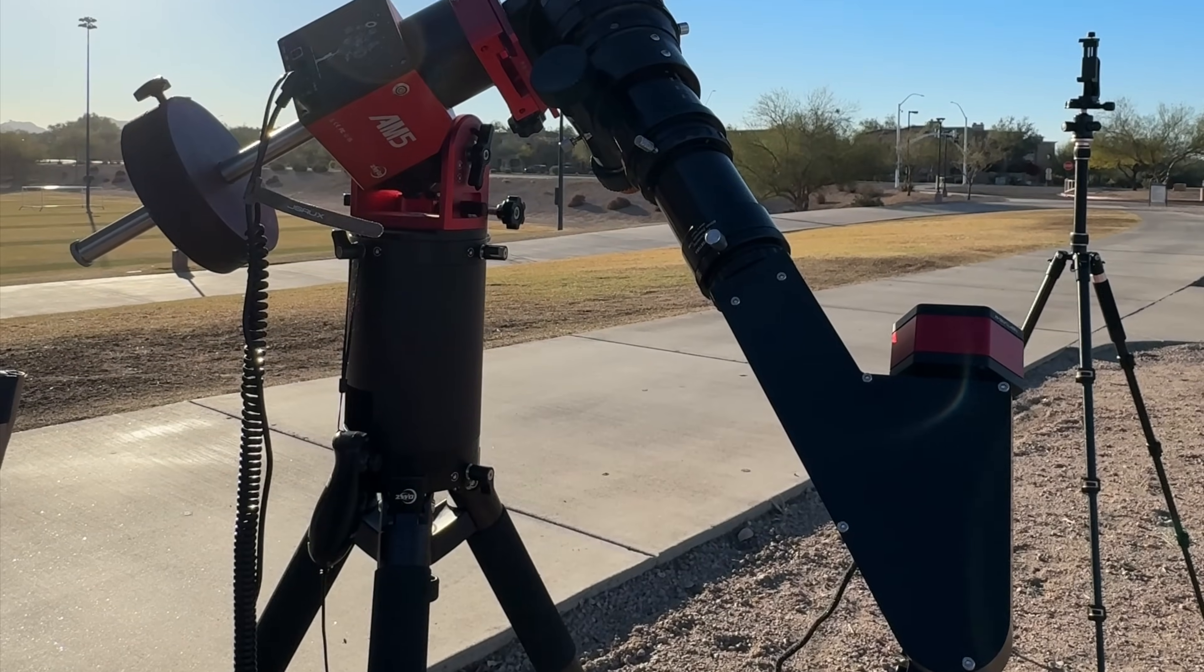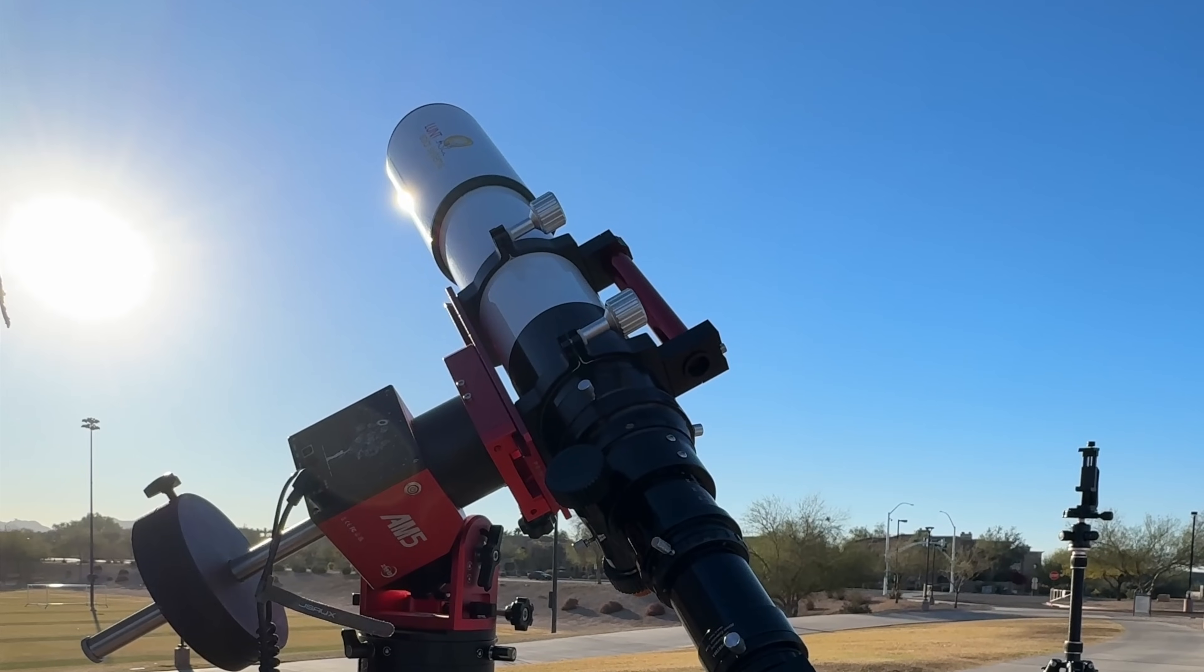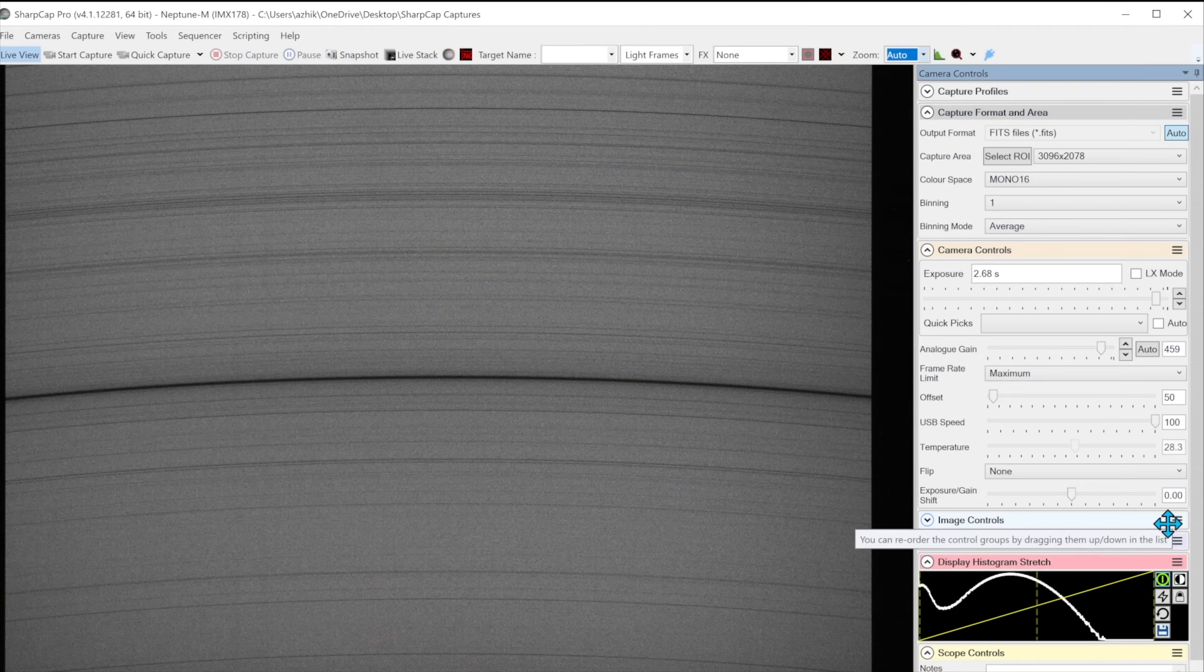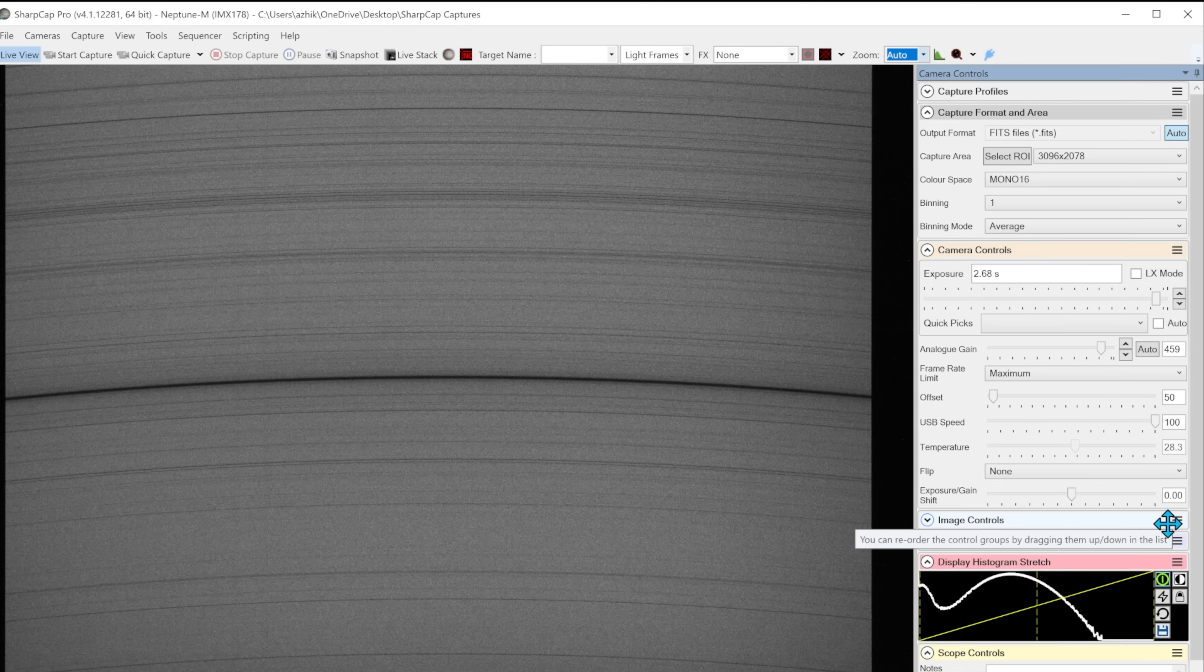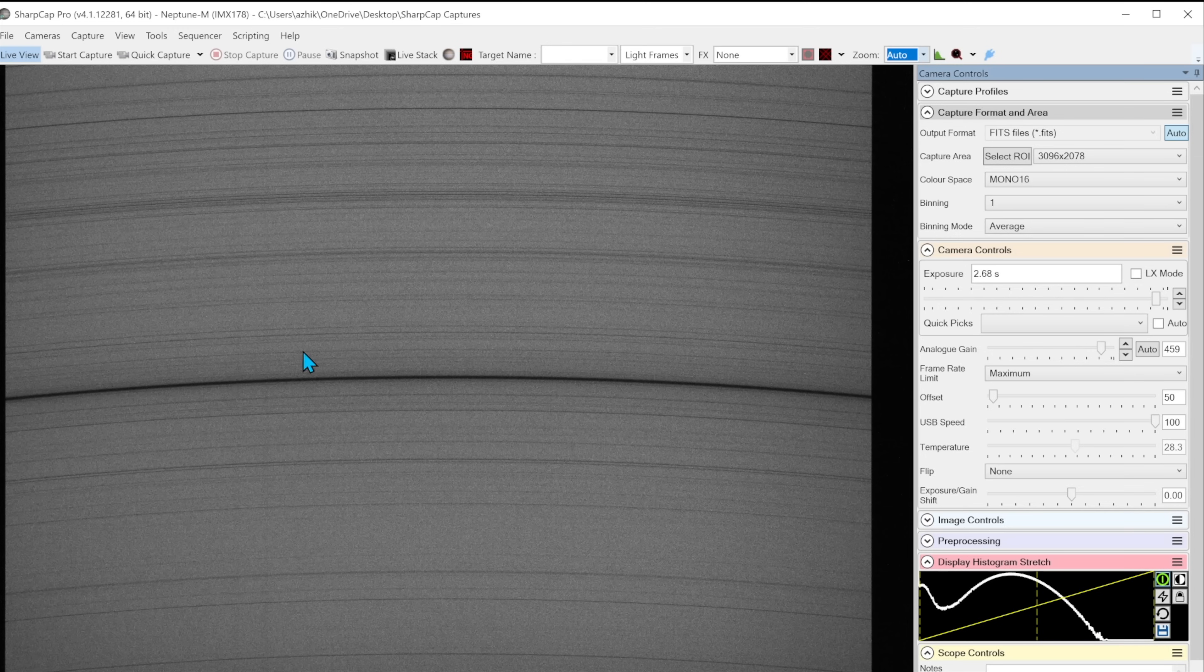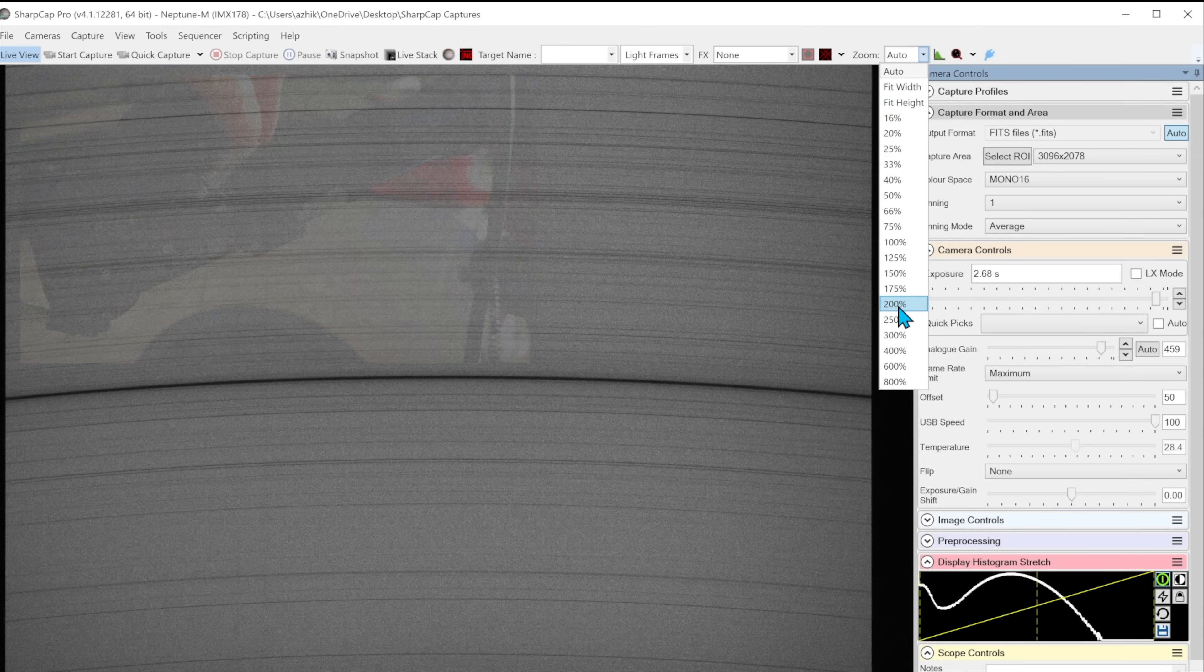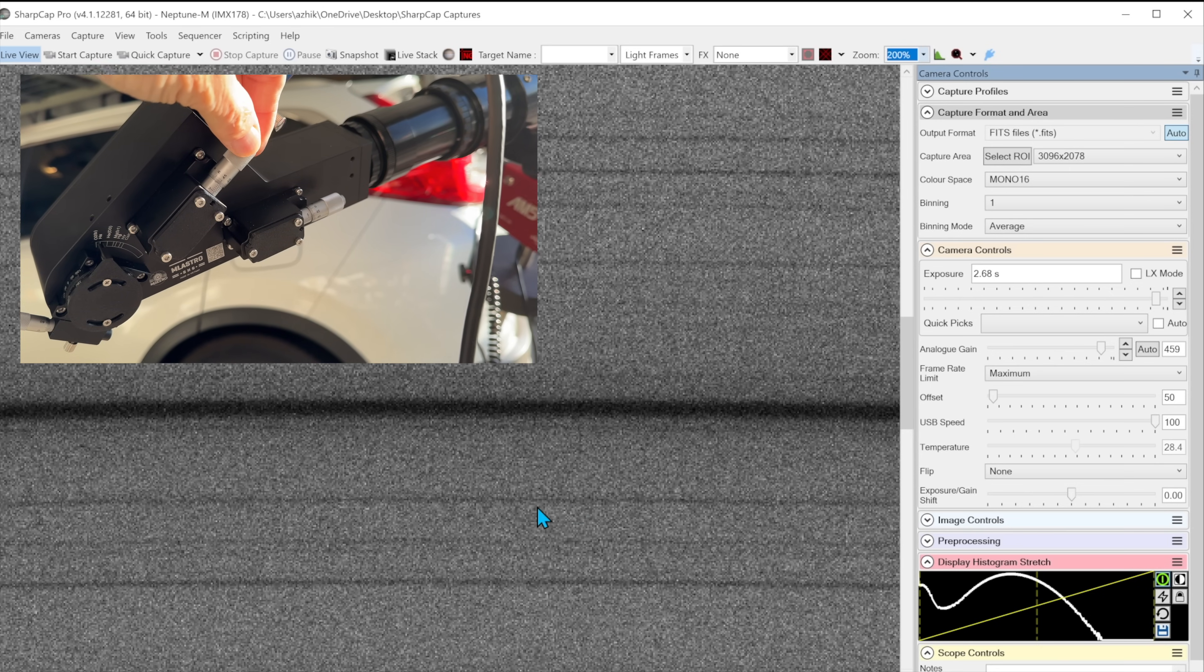Step one is to point the device about 45 degrees away from the sun. You'll need to adjust the gain, exposure, and histogram stretch so you can see horizontal black lines. This will likely require a full stretch, at least a one second exposure, and close to maximum gain. Adjust the camera focus so horizontal lines are sharp.